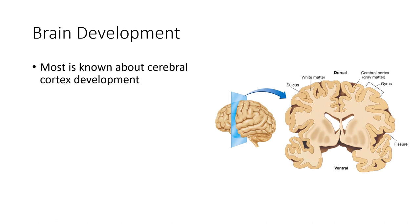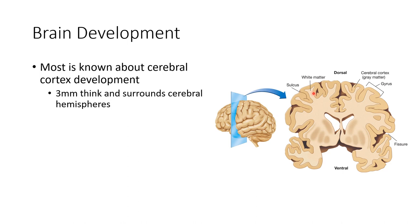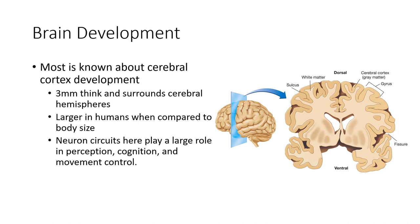Now let's look further at brain development after the neural tube has formed. What we know most about is cerebral cortex development. This is a three-millimeter thick section surrounding the cerebral hemispheres. The cerebral cortex is the outer portion of the brain. This area is larger in human brains relative to body size compared to other species, particularly because our cerebral cortex is quite folded, allowing more space. Neural circuits here play a large role in perception, cognitive processes, and movement control.